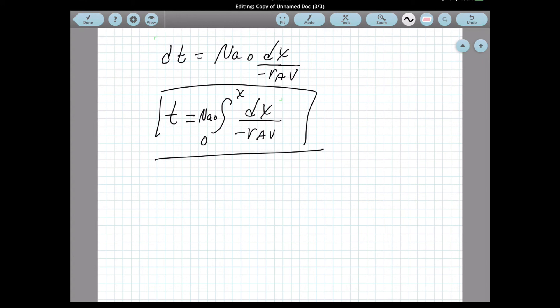We can also represent this equation in a graphical form. If we graph NA0 over negative rA times V, remember that this is also the initial concentration of A.